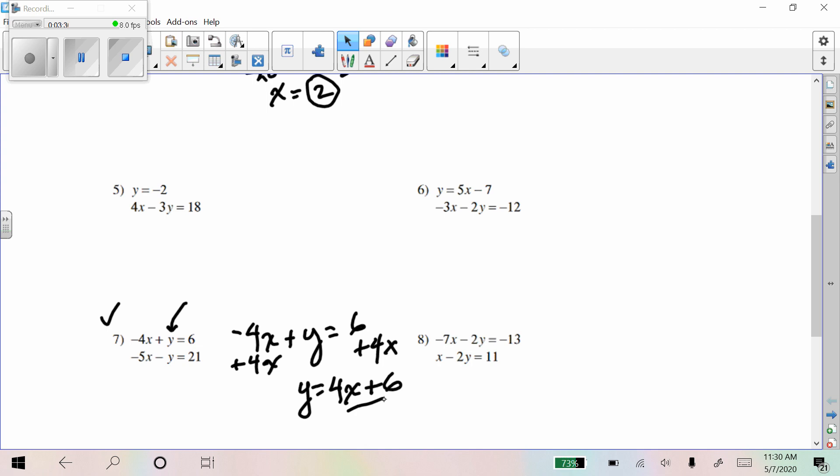Now I can put 4x plus 6 where the y is in the second equation. So I have negative 5x minus y. Now in place of y, and you really do need parentheses here, I'm going to put 4x plus 6. Because that negative will distribute and make both parts of 4x plus 6 negative when you simplify it. The other way you can think about it is you're distributing a negative 1. So you get negative 4x and a negative 6. And then I'm going to combine like terms.